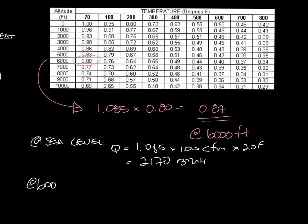Now at 6,000 feet, our equation becomes Q equals 0.87 times that 100 CFM times 20 degrees, and that equals 1740 BTU.